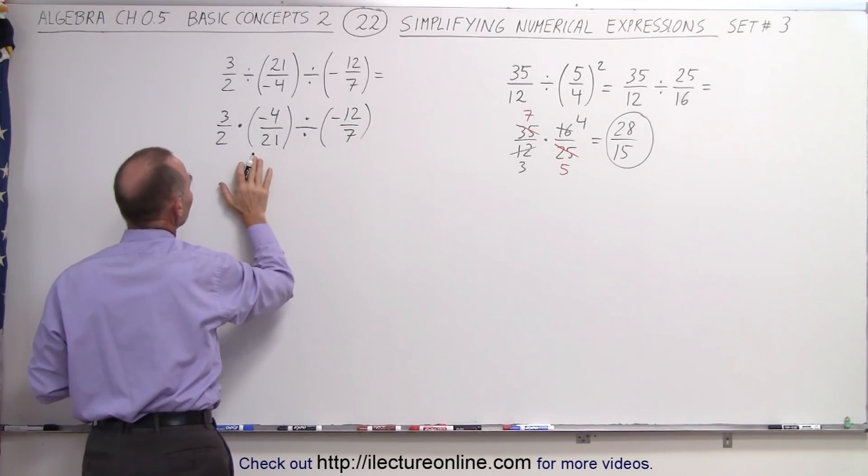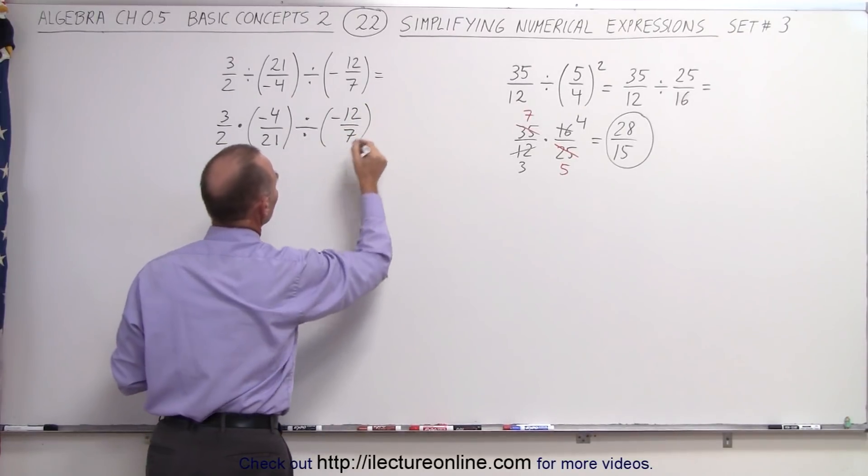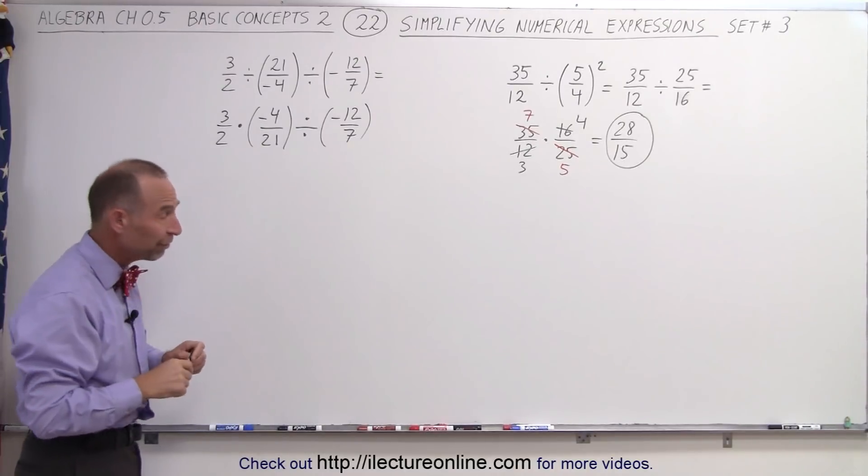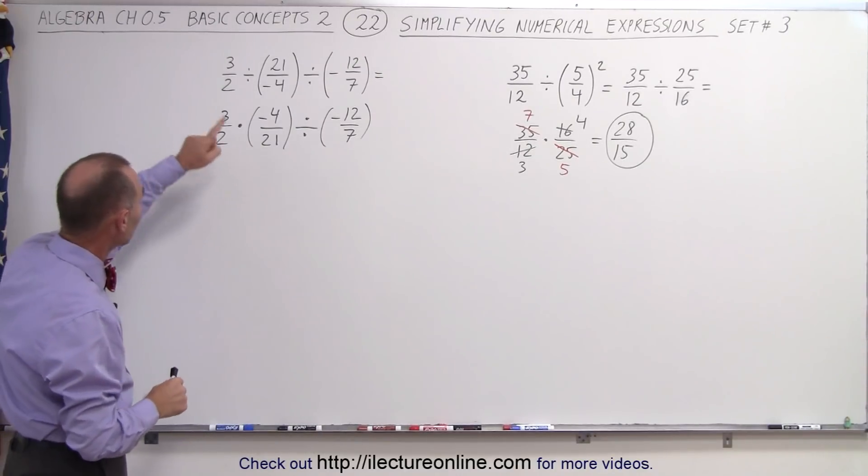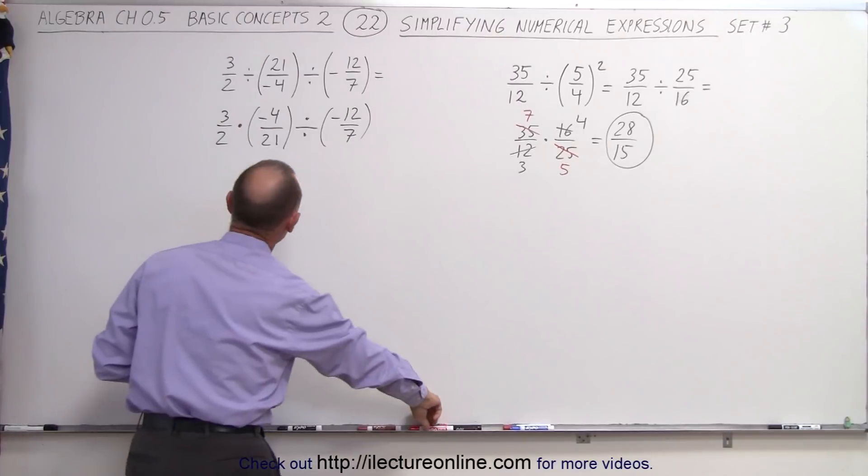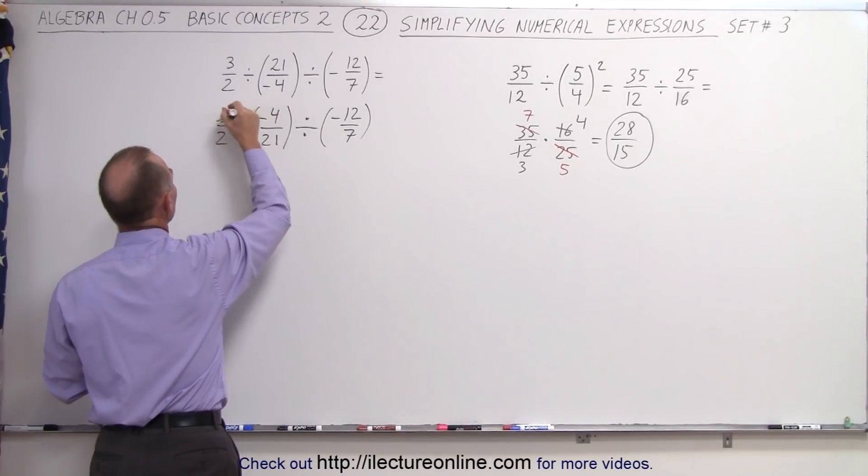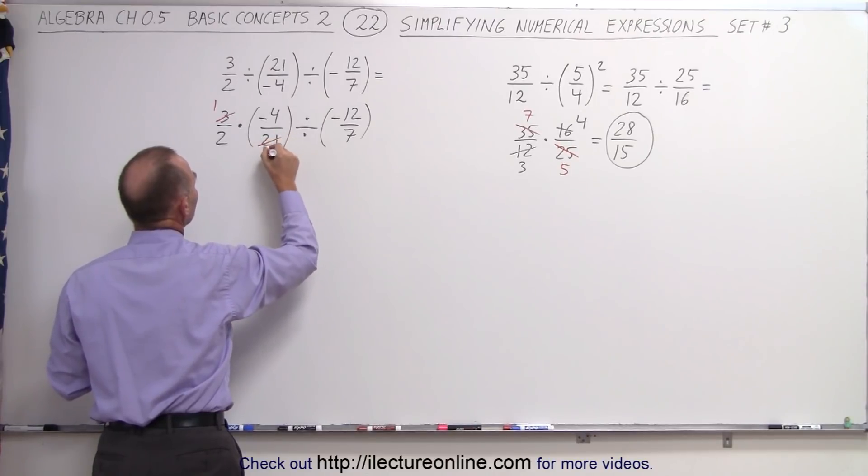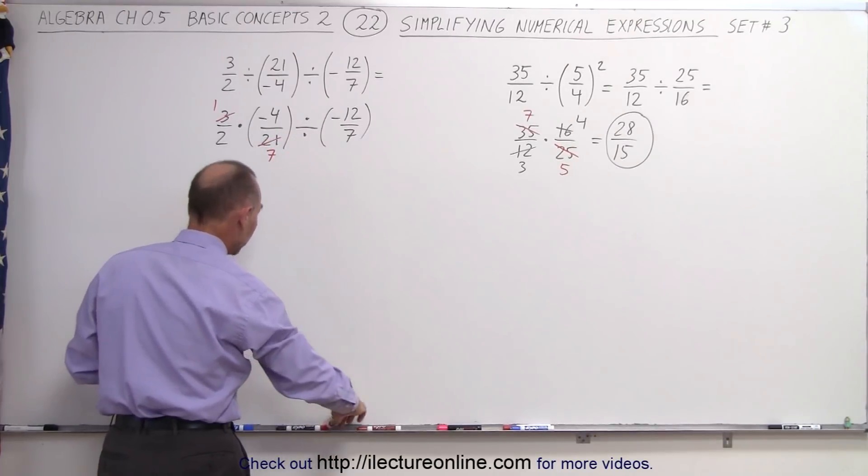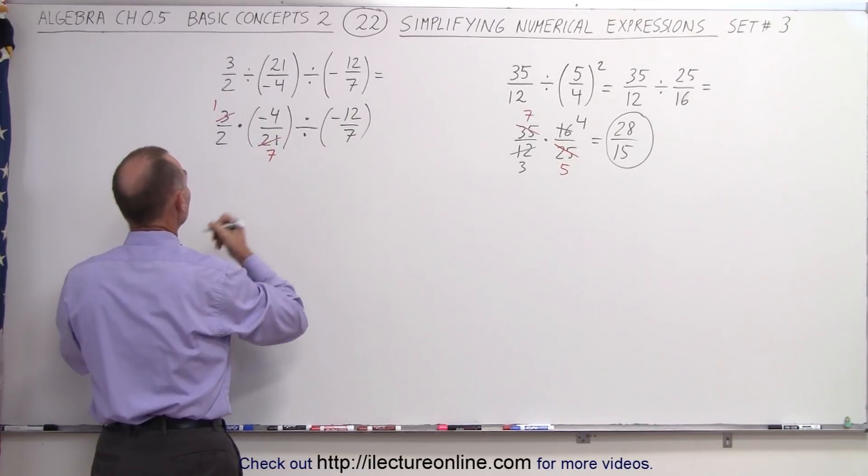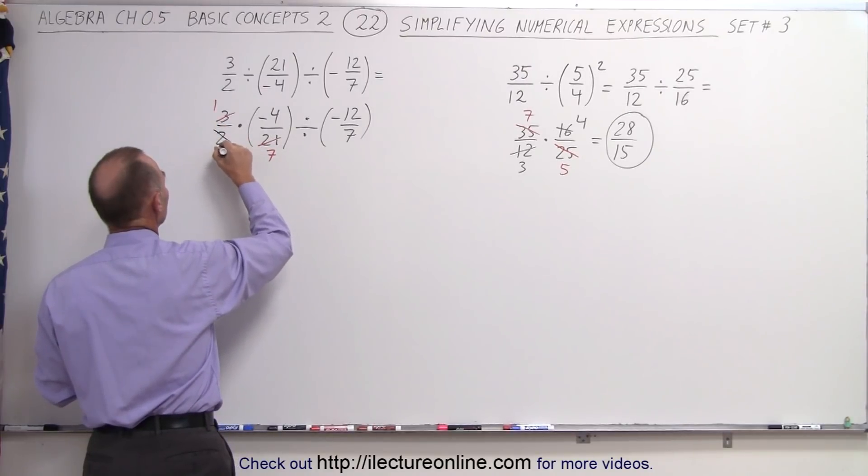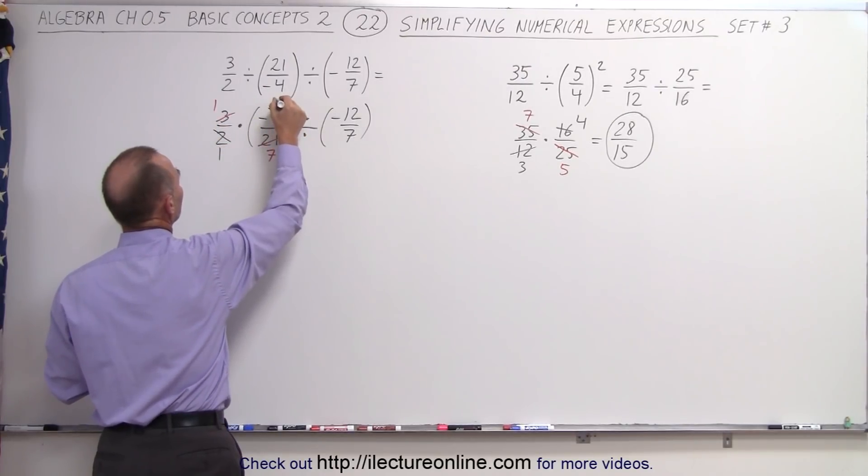So we're going to take care of this product first before we deal with that division symbol. Before we multiply, notice we can do some simplification here. The 3 and the 21 are both divisible by 3, so 3 divided by 3 is 1, 21 divided by 3 is 7. And notice the 2 and the 4 are both divisible by 2, so 2 divided by 2 is 1, 4 divided by 2 is 2.